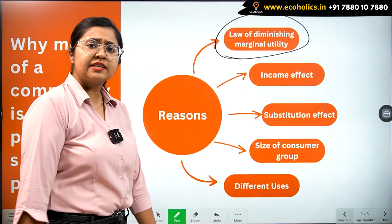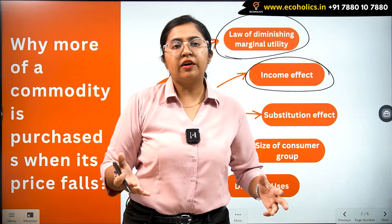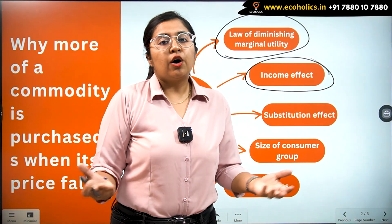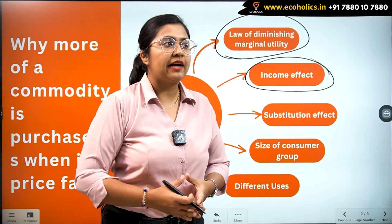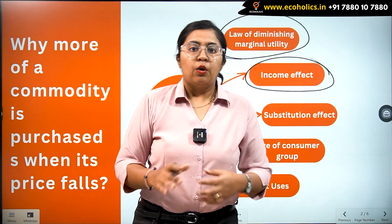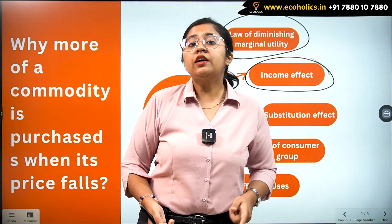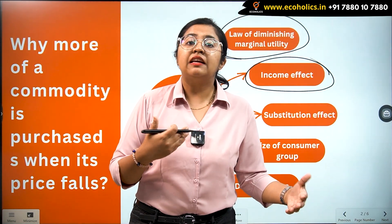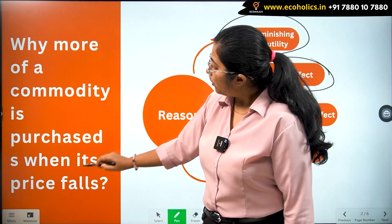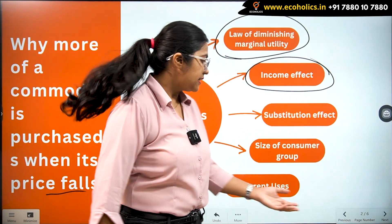The next reason is the income effect. Here we are not talking about income effect in monetary terms — for example, your monthly income increasing from 50,000 to 65,000 rupees. We are not talking about an increase or decrease in monetary income. We are talking about the real impact on income. We have discussed that more commodities are consumed when the price falls, so let's apply this.